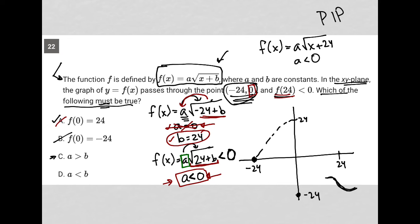So let's deal with that information now. So choice C says a is greater than b. Well, I know that a is negative and I know b is positive 24. So no, a is not greater than b. So that's gone.